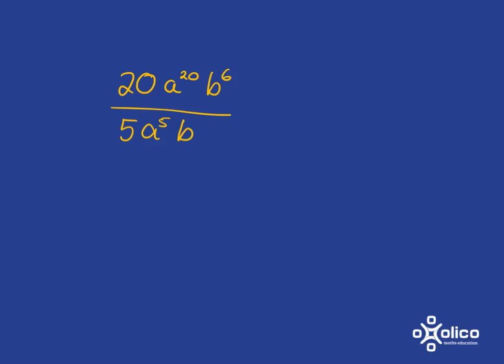We're simply going to work step by step. So we're first going to deal with the plain old numbers, and that's simple. We've got 20 divided by 5, and that gives us an answer of 4.